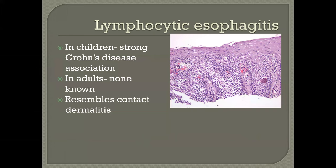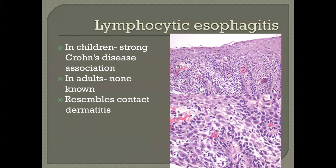Another entity in the differential is lymphocytic esophagitis, where the infiltrate is exclusively lymphocytes. In children there is a fairly strong association with Crohn's disease, but in adults it does not have a specific recognized association — it may be partially treated reflux esophagitis or may reflect a sort of contact dermatitis. At higher magnification you can see squiggly nuclei that can sometimes appear multilobated — don't confuse these with neutrophils, which have more rounded rather than squiggly nuclei.